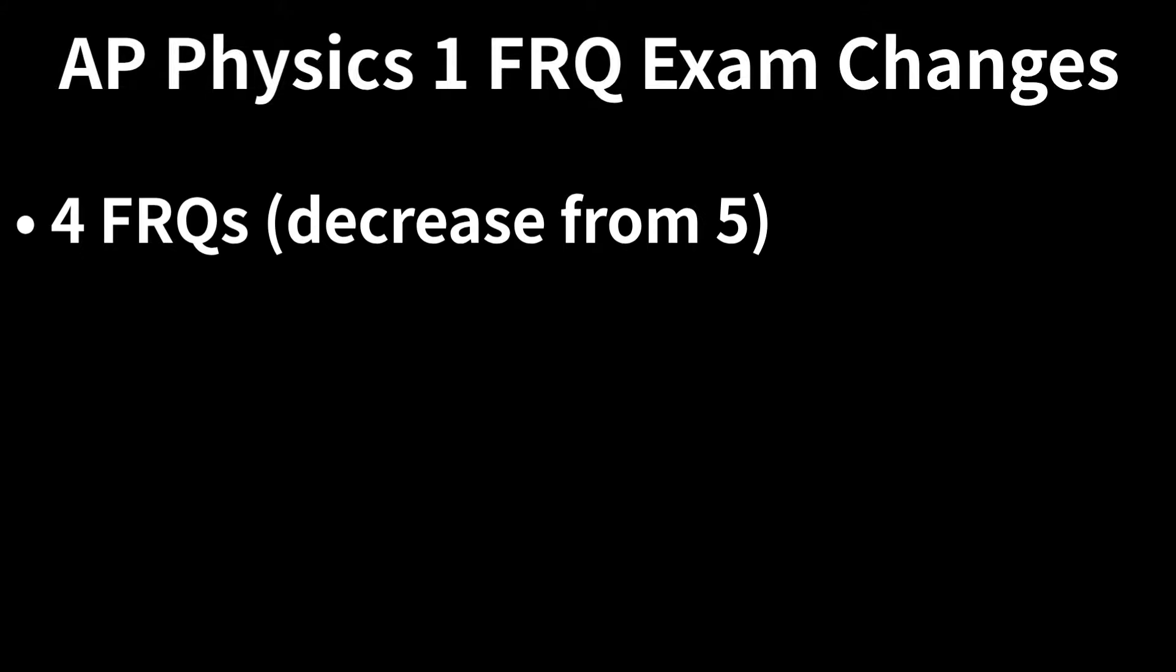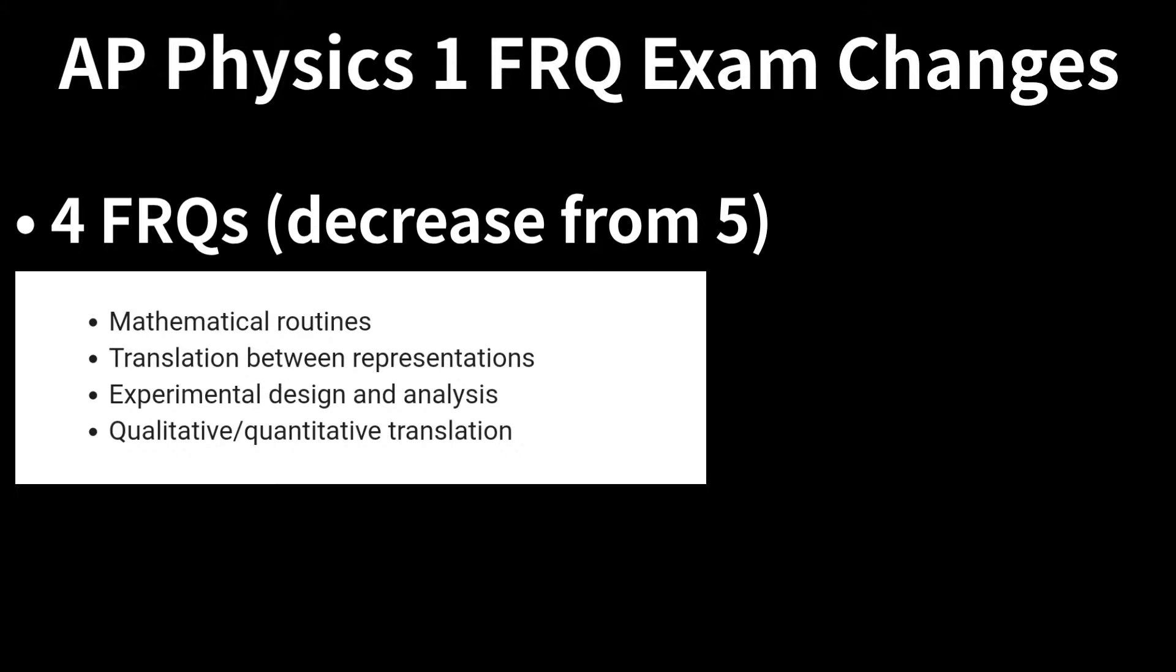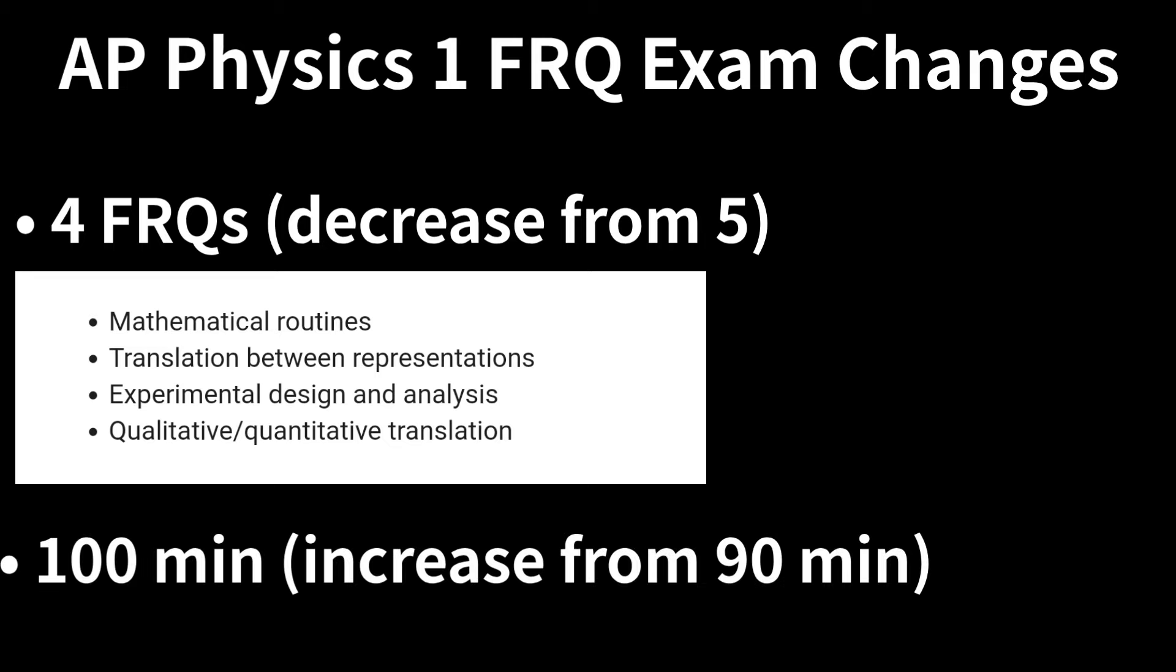For Section 2 FRQ, we have a reduction from 5 to 4 questions of the types below and a 10-minute increase in time from 90 minutes to 100 minutes, granting 7 additional minutes per FRQ from 18 minutes to 25 minutes, assuming identical question weight.